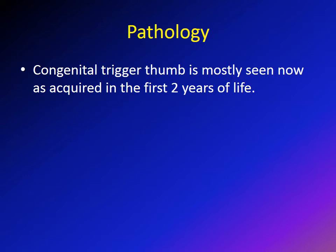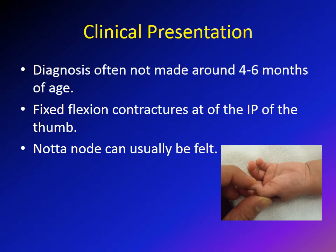Despite calling this congenital trigger thumb, most authors now consider the condition as developmental rather than congenital, because there were good prospective studies that failed to see any case of congenital trigger thumb in newborns. Most authors now consider it a developmental condition in which the problem develops early in life and not during birth.